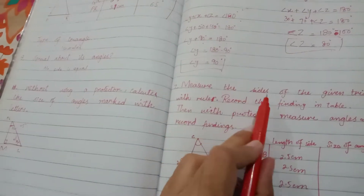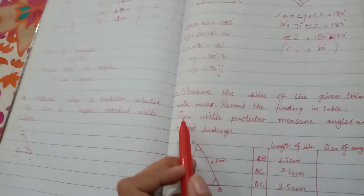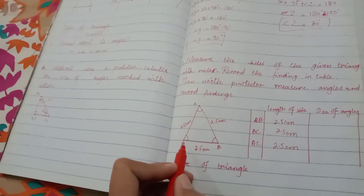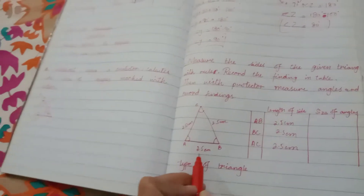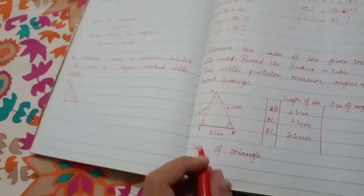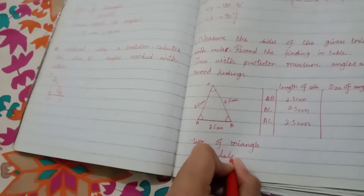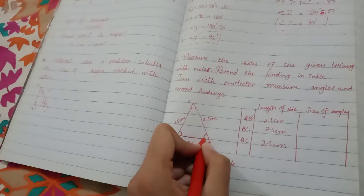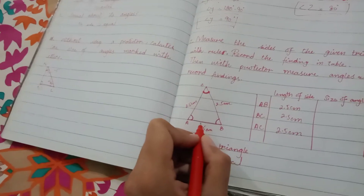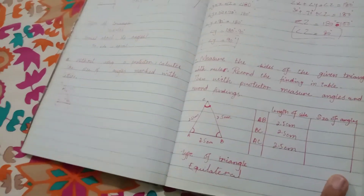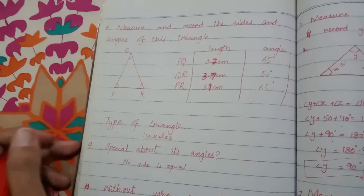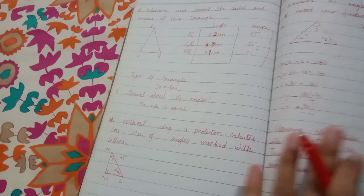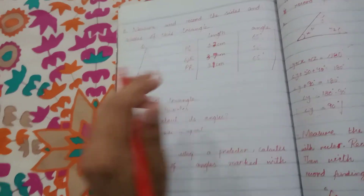Question number 7: measure the sides of the given triangle with a ruler, record the findings in the table, then use a protractor to measure the angles and record those findings. I have measured the sides — this is 2.5 and this is 2.5, which means it is an equilateral triangle. For question 8, the answer is isosceles — two sides are equal, it is 3.7 and 3.7. For question 9, what is special about a scalene triangle? No sides are equal.